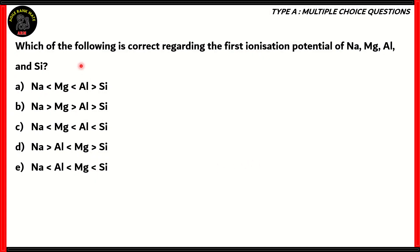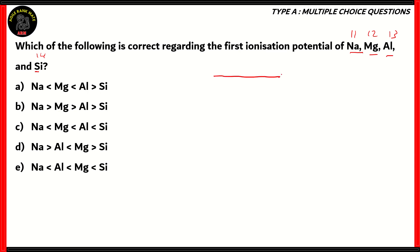Which of the following is correct regarding the first ionization potential of sodium, magnesium, aluminium, and silicon? Let's look at the elements themselves. Sodium, magnesium, aluminium, silicon — atomic numbers are 11, 12, 13, and 14, respectively. So basically, we're going across the same period.